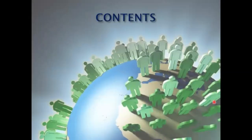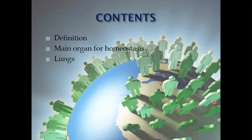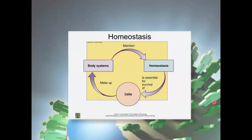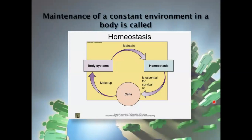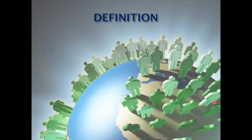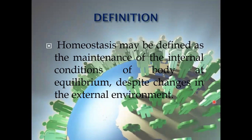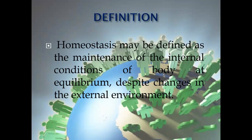First of all, we will discuss the contents: definition, main organ for homeostasis, lungs, skin, and kidney. In the previous lecture, I told you about the definition of homeostasis. Homeostasis is the maintenance of a constant internal environment in the body, essential for survival of human beings and all living organisms. It may be defined as the maintenance of the internal condition of the body at equilibrium, despite changes in the external environment.